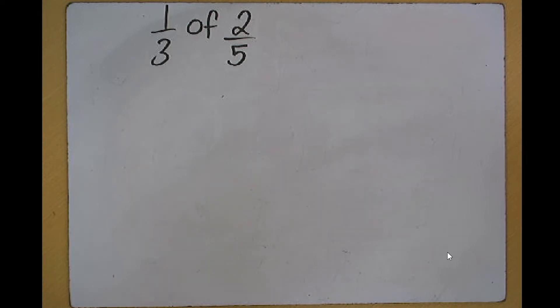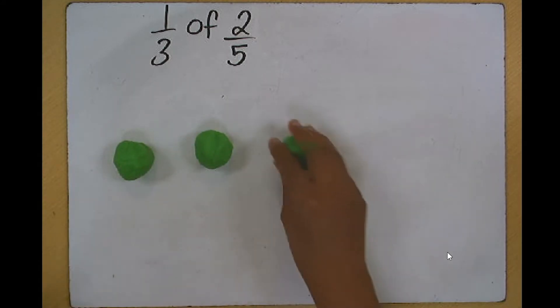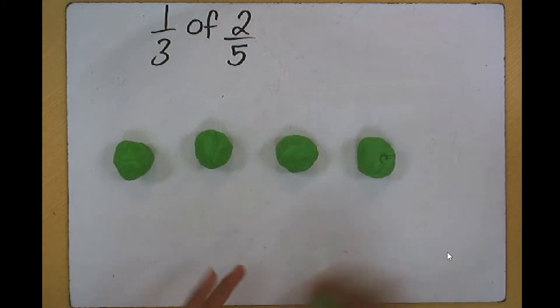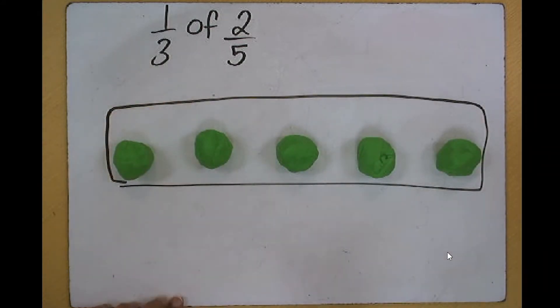In this case, we need to use the two-fifths, which means I'm going to start by dividing that Play-Doh into five equal parts. Remember, this was the entire Play-Doh that we took out of the container.